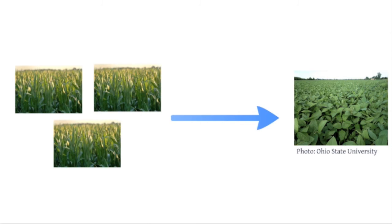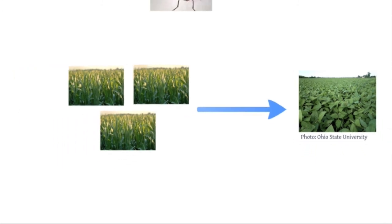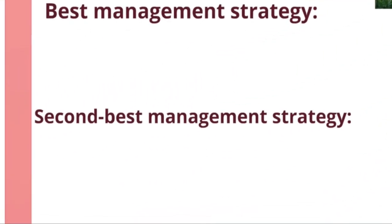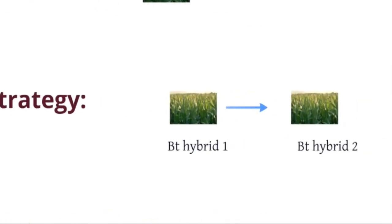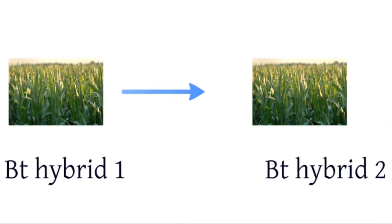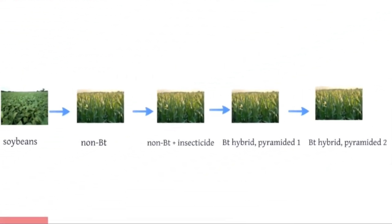There are variants of the western corn rootworm that will lay eggs in soybean fields, and their larvae may damage first-year corn the following year. This is definitely possible, but we don't have a clear handle on the distribution of these variants, and crop rotation will manage the majority of rootworms. If crop rotation is not feasible, BT hybrid rotation is the second best thing to do to manage these insects. Alternating BT hybrids will inject some diversity of the toxins that these insects are exposed to, and using stacked or pyramided traits is advised over single traits.